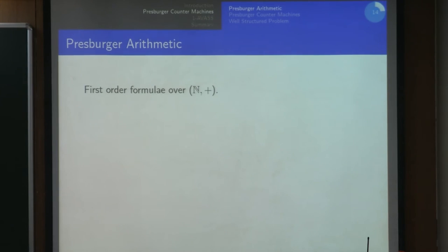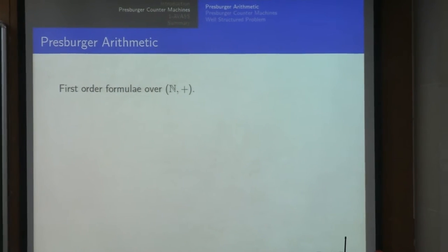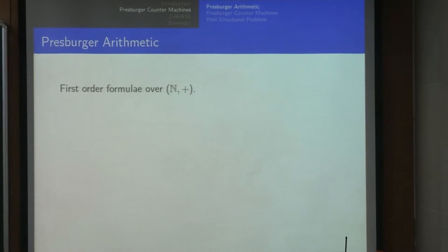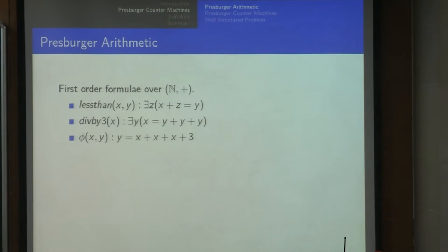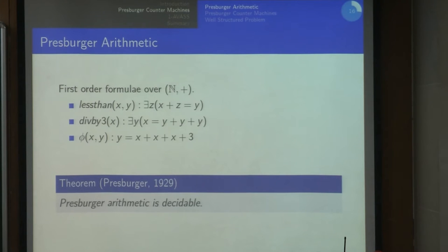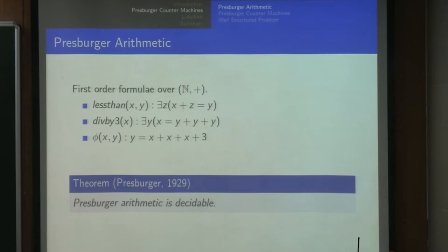Now let's introduce a model. Pressburger arithmetic is the first-order fragment over natural numbers with addition. You can check divisibility, multiplication by constant, and so on. It is decidable—given a formula in Pressburger, you can check whether it's valid or not—and this is shown by quantifier elimination, adding modulus operators. It is also quite expressive for counter systems.